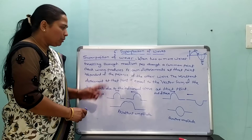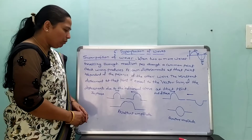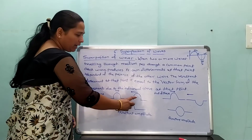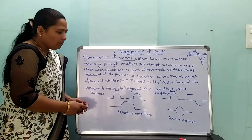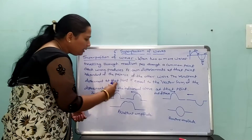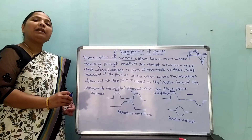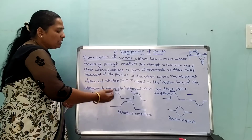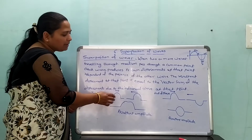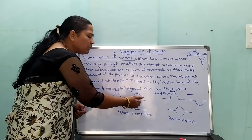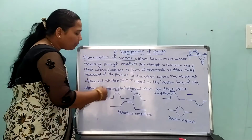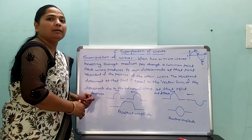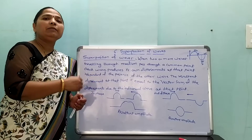Example of superposition of waves. Consider two waves. Two waves are in phase. What is meant by in phase? Two waves are in phase when one waveform has a crest and another waveform also has a crest. Therefore crest and crest, trough and trough — the two waveforms are in phase.